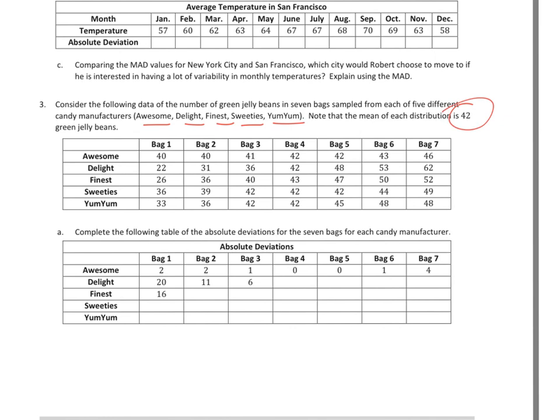So, what I need to do now is take a look at part A, and it says, complete the following table of the absolute deviations for 7 bags for each candy manufacturer. So, I'm taking these numbers from this chart and finding the difference with the mean of 42. And, because it says absolute deviation, I'm just finding how far away it is from 42. I'm not determining whether it's negative or positive, because it doesn't matter, because we're looking for the absolute value. So, that's why for Awesome, if we look at bag 1, it's 40, it's 2 away. It should be a negative 2, but because it's absolute deviation, we're working with positive numbers. So, what I'm going to actually do, I find easier, is I'm going to work down.